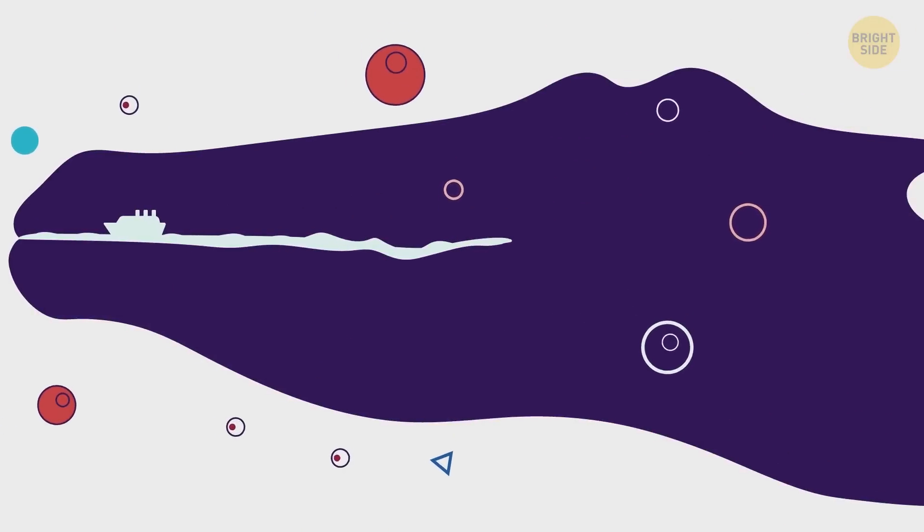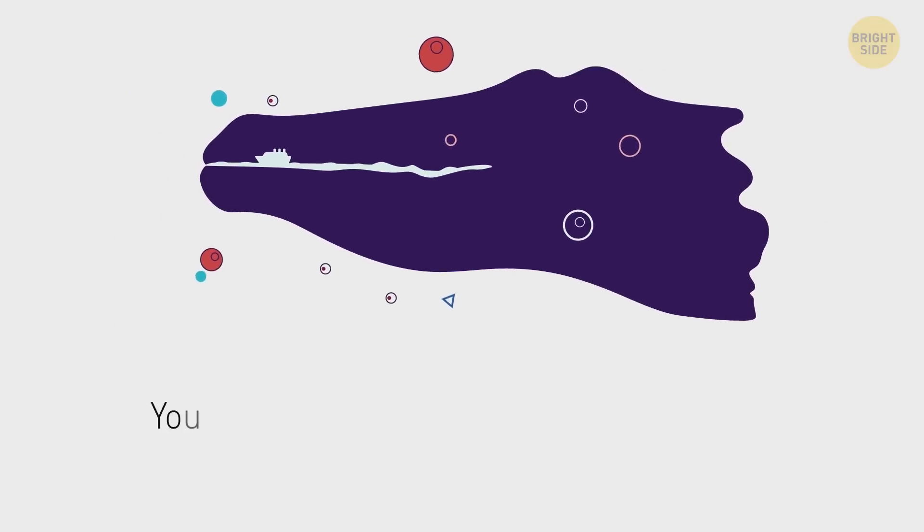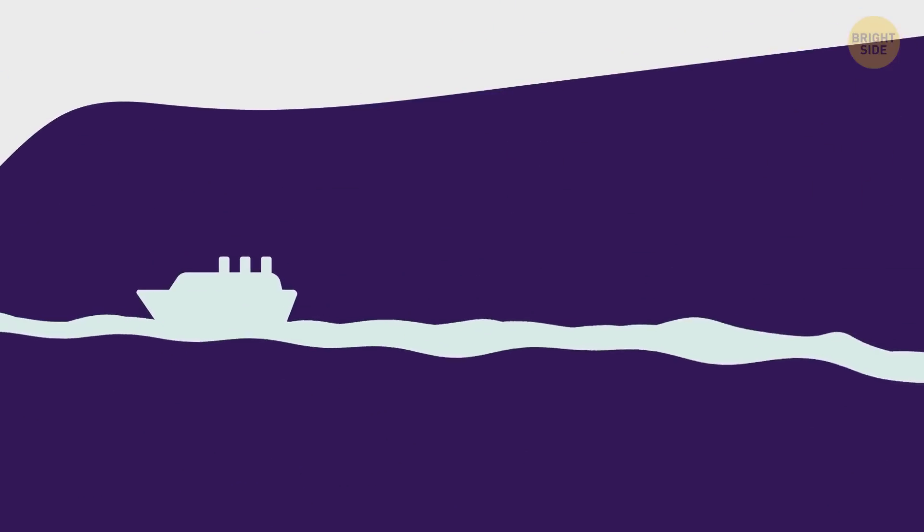The next illusion. Those who saw a crocodile here love a quiet life and don't like to open up to something new. But if you saw a boat, you're more creative than other people and pay attention to small details.